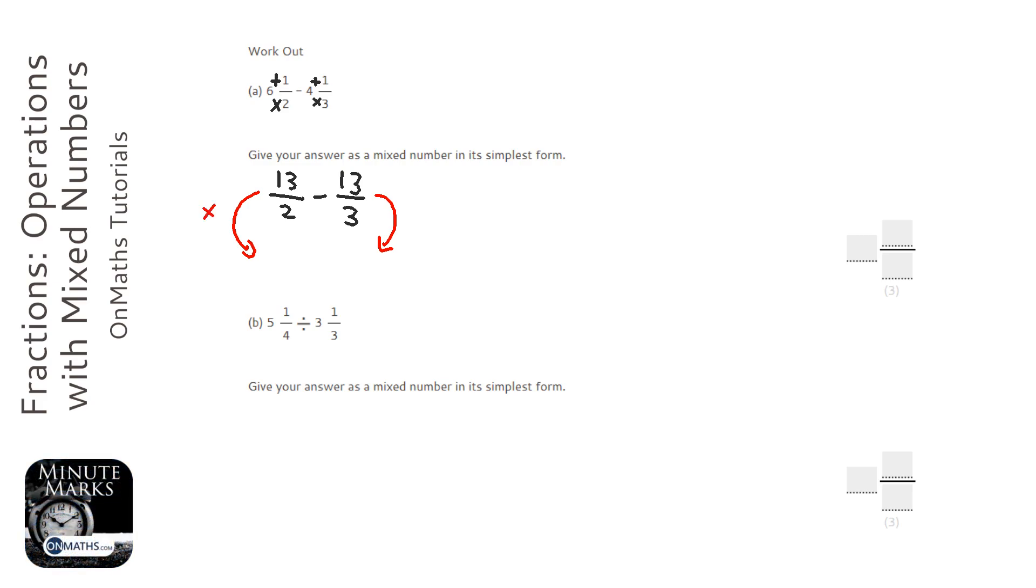So we're going to times top and bottom here by three to get that two to a six. We're going to times top and bottom here by two to get that bottom to a six. So thirteen times three is going to be thirty-nine over six. And thirteen times two is going to be twenty-six. And then three times two is six.